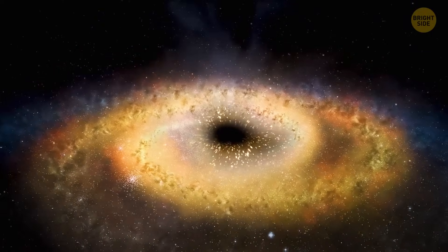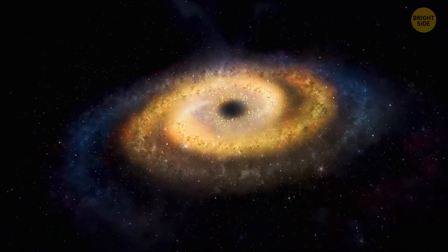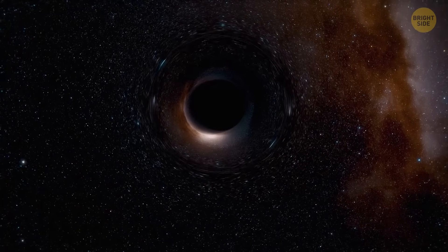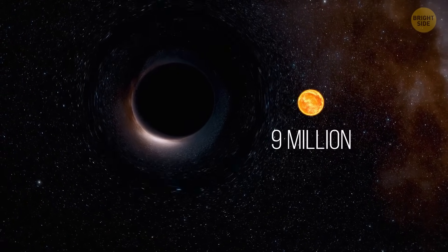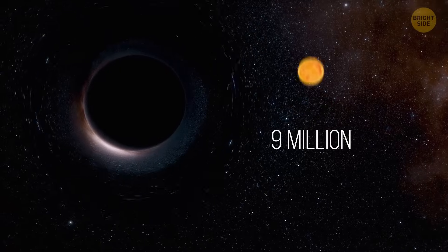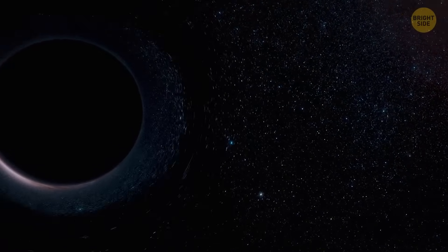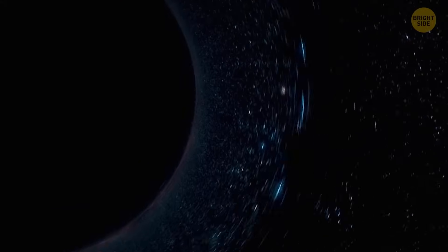The black hole is surprisingly small and not massive at all. It's actually one of the smallest found in the early universe. It's equal to approximately 9 million suns. It might sound like a lot, but in reality, supermassive black holes tend to grow to billions of times the mass of our star.